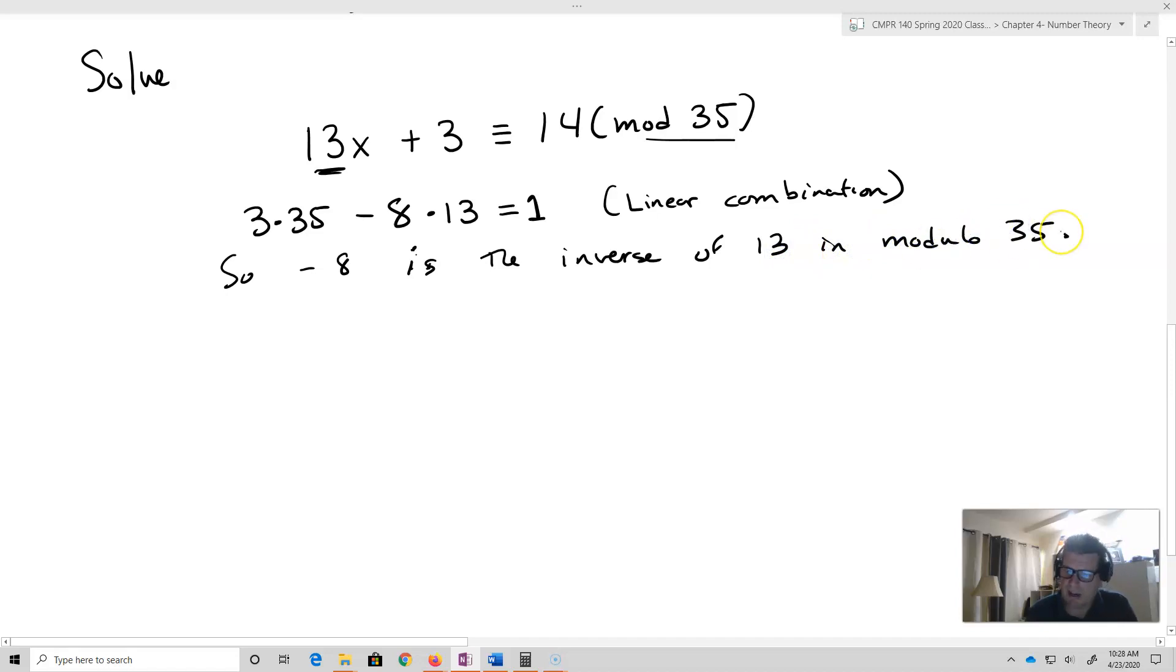Now you can use negative 8 if you'd like. But what I want to do is actually turn that into a positive number. And how I'm going to do that is I'm going to take 35 minus 8. That's 27. And so 27 is equivalent to negative 8 modulo 35. So 27 is also the inverse. So basically we take our modulo, we subtract the negative from the modulo. And that gives us our equivalent positive value.